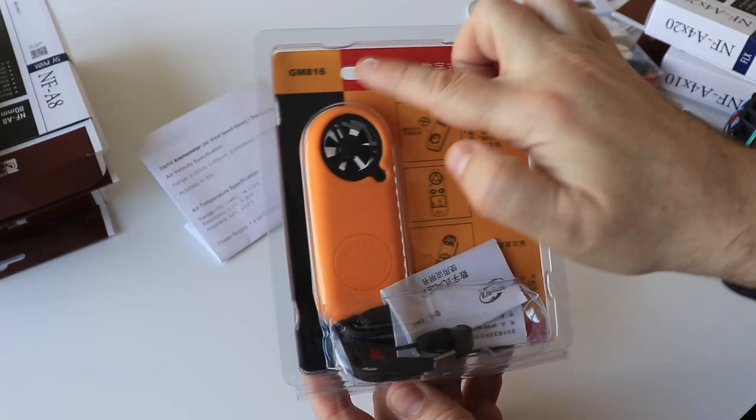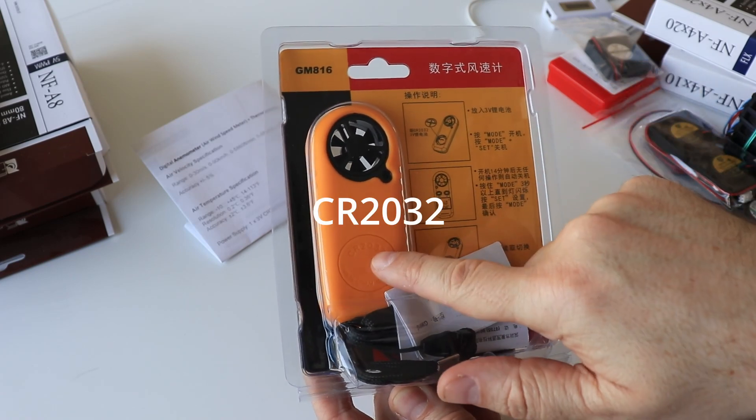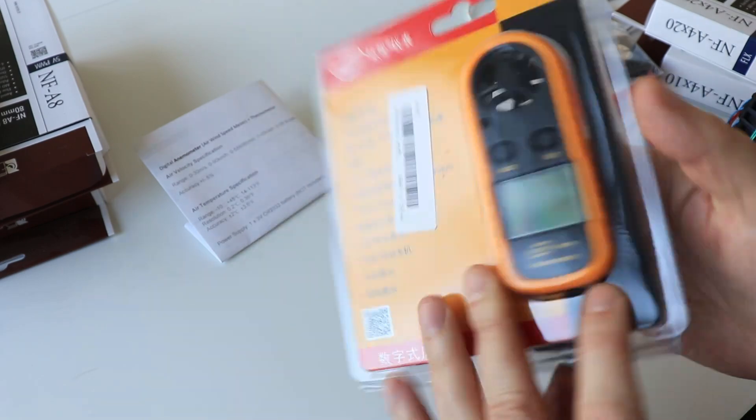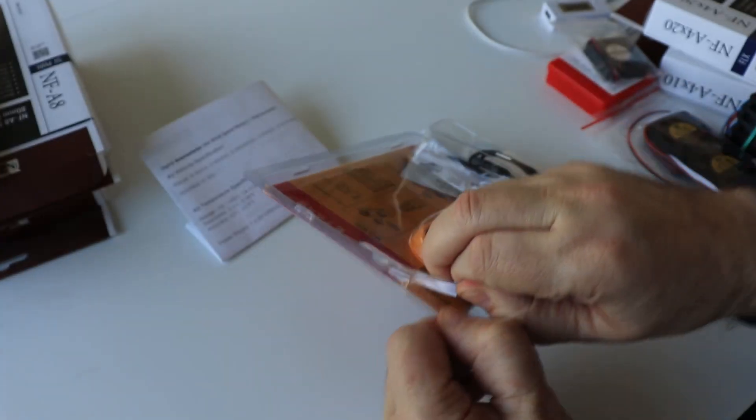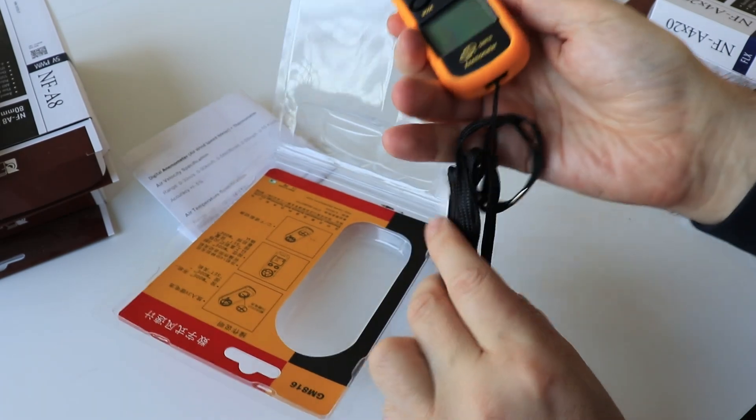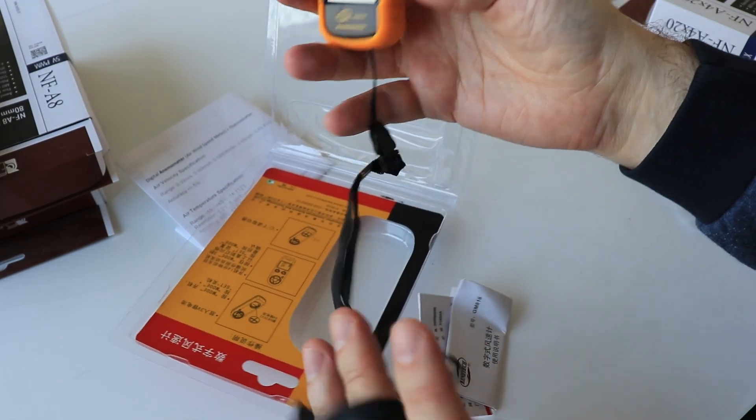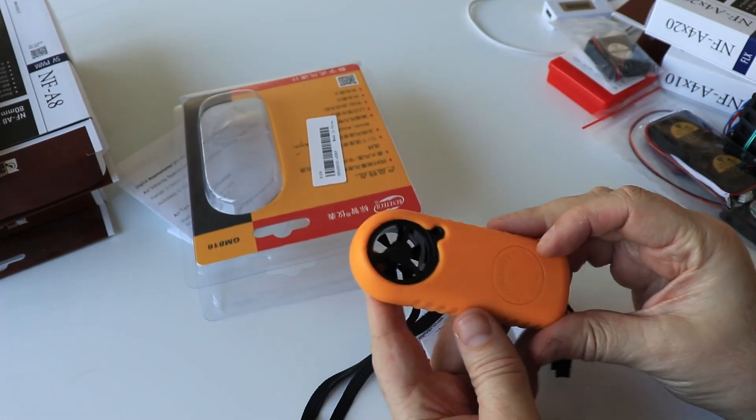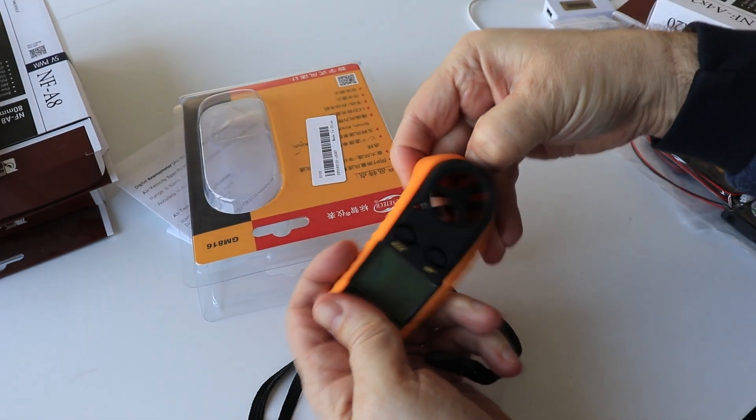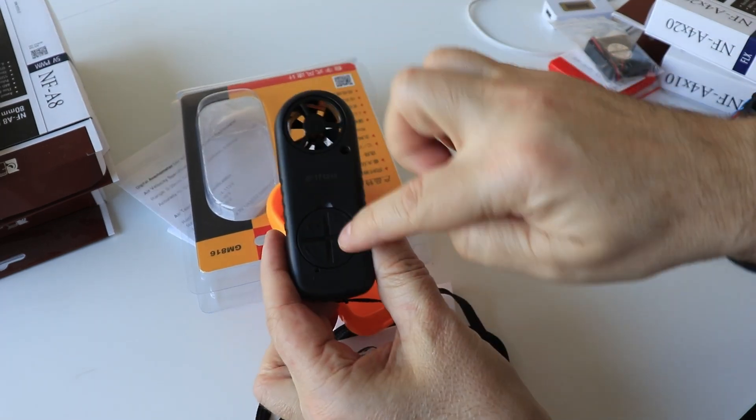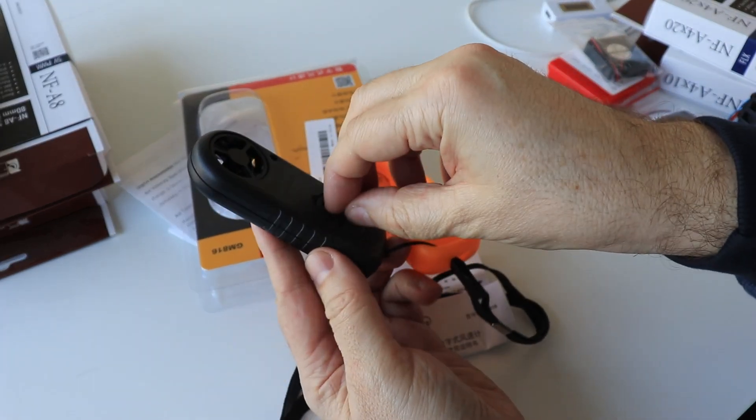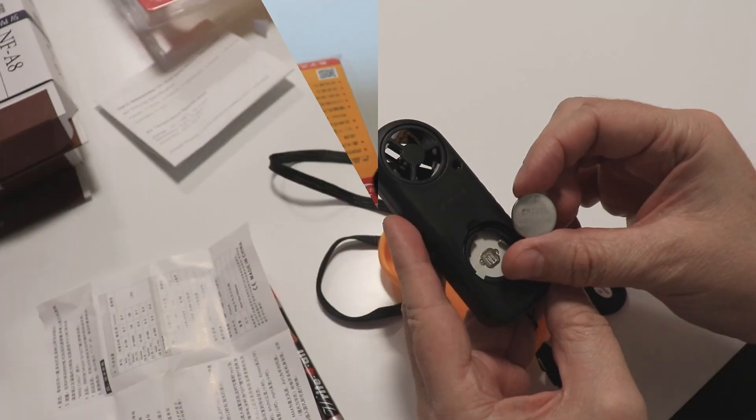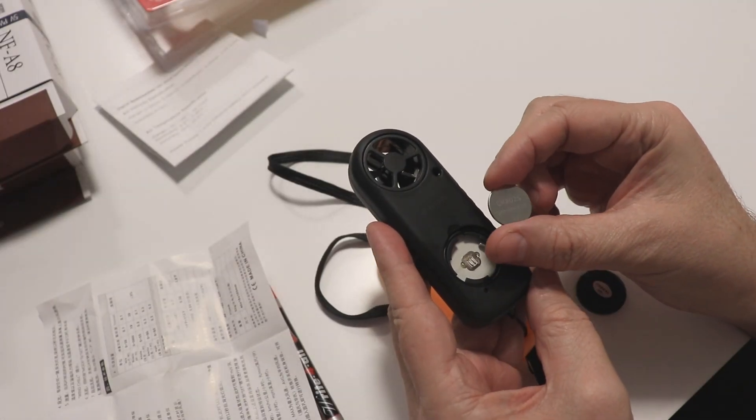Let's see what's in the box. There is the anemometer. It works on CR2032 battery which is not included. We have this strap. I can remove this protection and then I can access to the battery holder. Now unfortunately I don't have a 2032 battery.